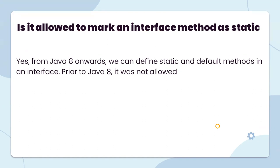Next question: is it allowed to mark an interface method as static? Yes. From Java 8 onwards, we can define static and default methods in an interface. Before Java 8, this was not allowed, but now it is allowed — an interface can contain static methods or default methods.